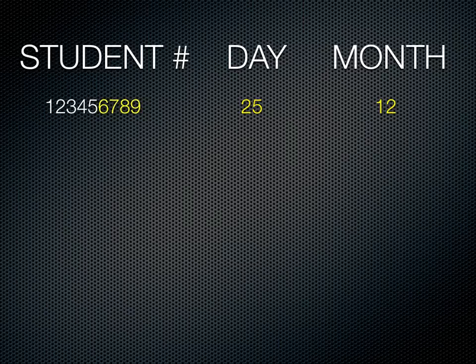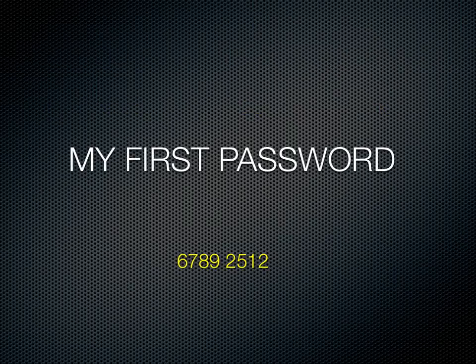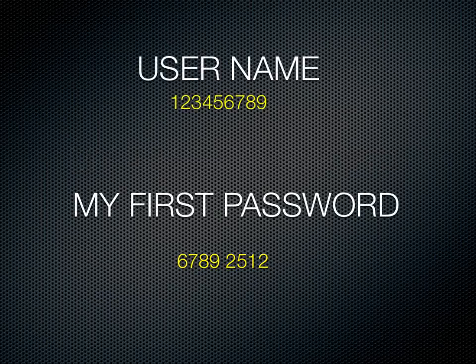To figure out the code, you've got to take the last four numbers from your student number, stick it together with the day you were born, stick that on the end, then stick the month you were born, and you end up with this kind of first password code. So to log in, you'll use your username — which is your student number — and this code password that you just figured out. And that should get you in.